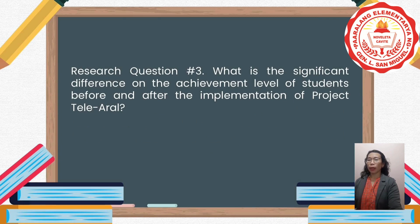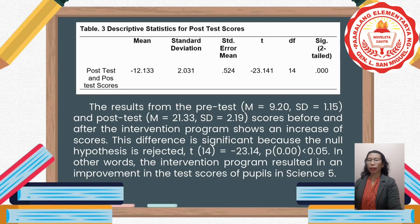Research question number three: What is the significant difference in the achievement level of grade 5 pupils before and after the implementation of Project TELEARAL? The null hypothesis states there is no statistically significant difference between the pre-test and post-test scores, while the alternative hypothesis states that there is. The results from the pre-test and post-test, as stated in table number three, showed an increase of scores, and this difference is significant because the null hypothesis is rejected.